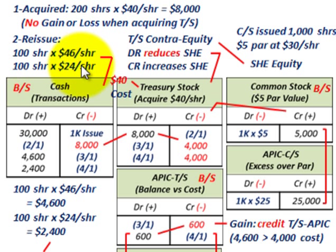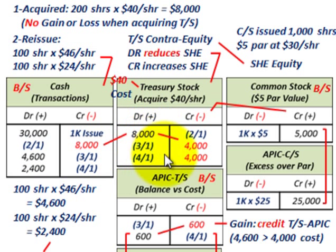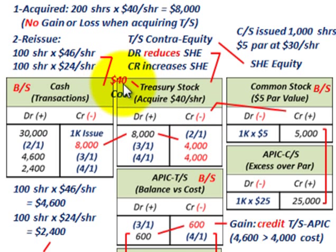Let's say the issue price we received is $24 a share. So we debit our cash account for $2,400. Then we move to the treasury stock account — we would credit or reduce our treasury stock by 100 shares times the $40 per share cost, or credit it for $4,000, based off that cost.